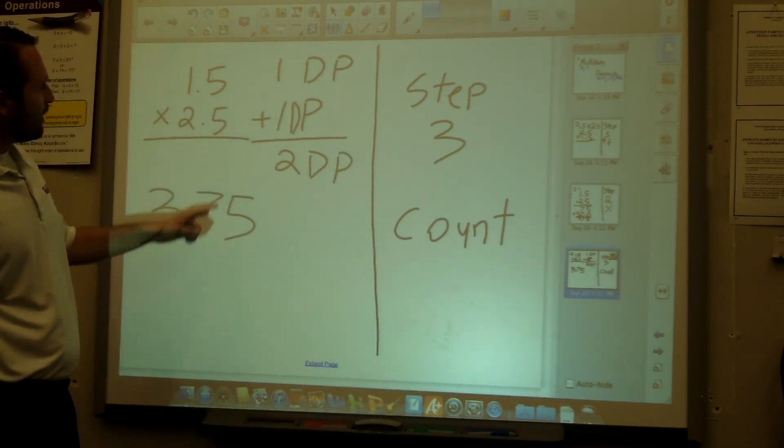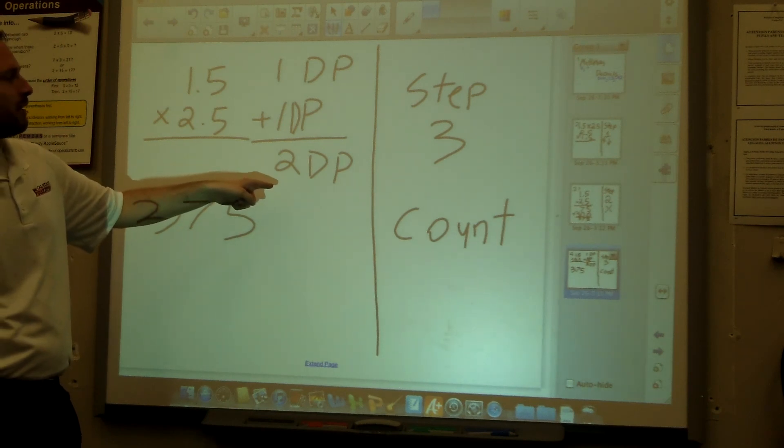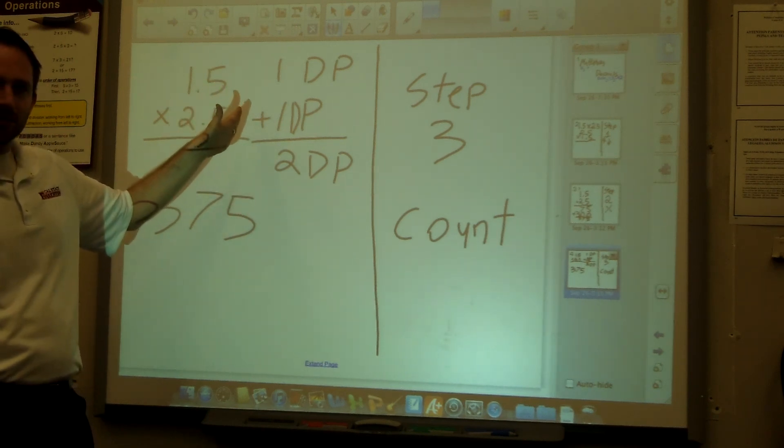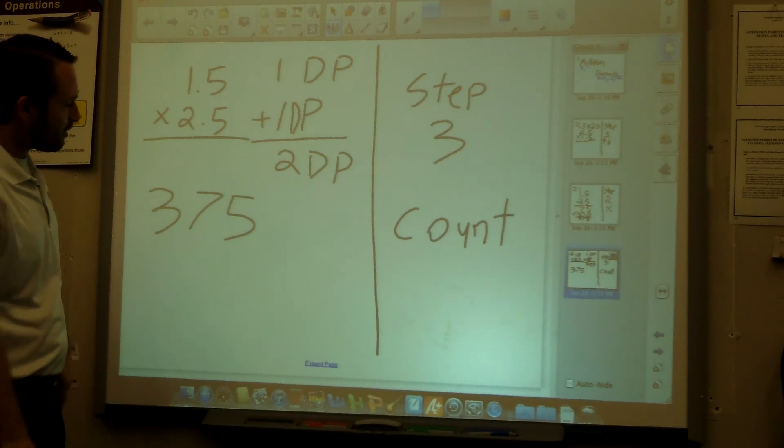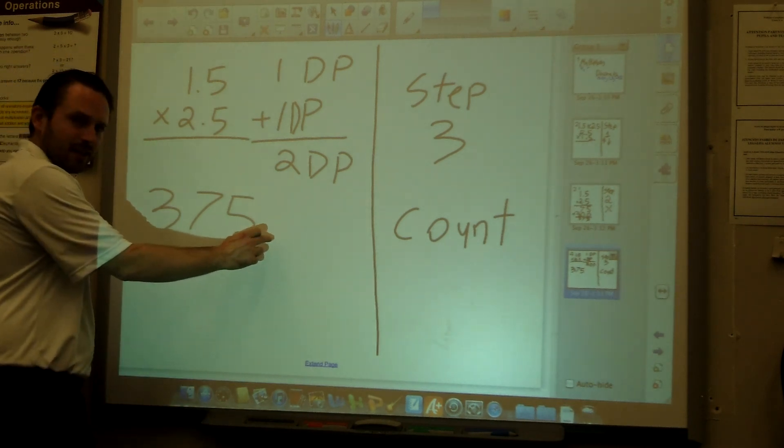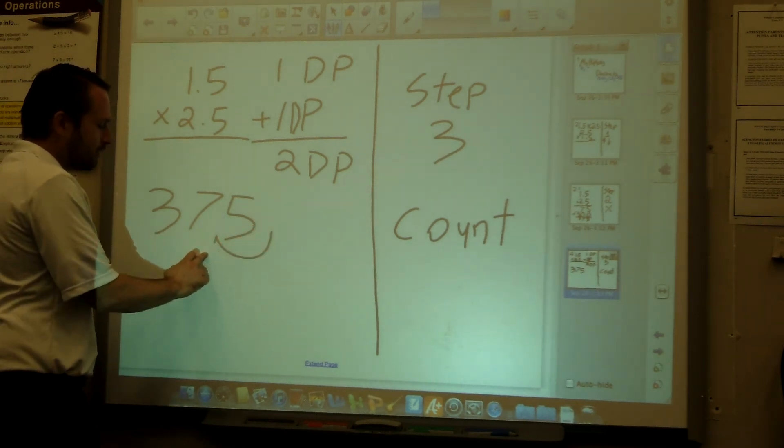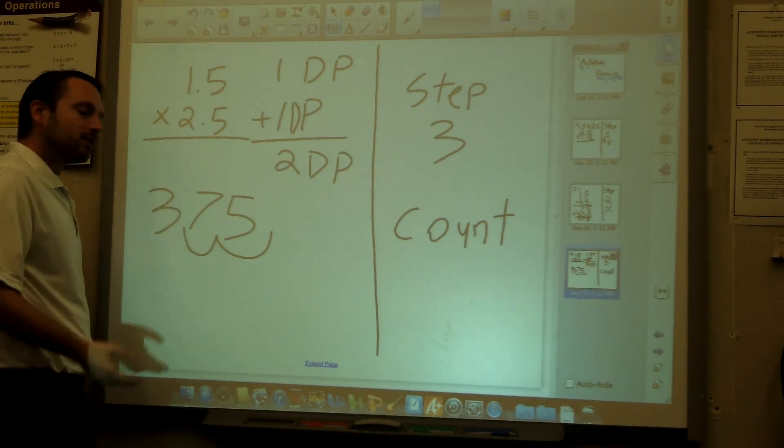Now that I know that two DP, and I counted the decimals, now I'm gonna count right here. I'm gonna start right here at the very end. I'm gonna go one, two. So the answer you're gonna get is gonna be 3.75. That's the answer.